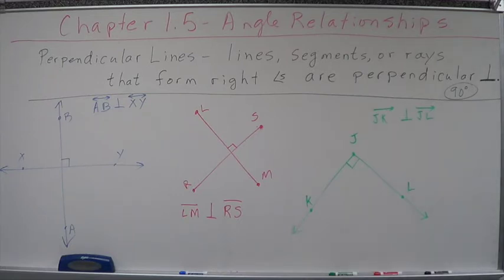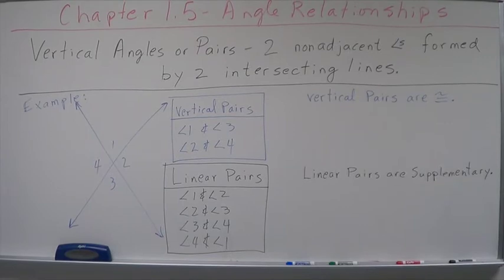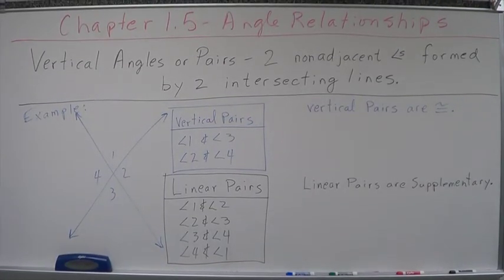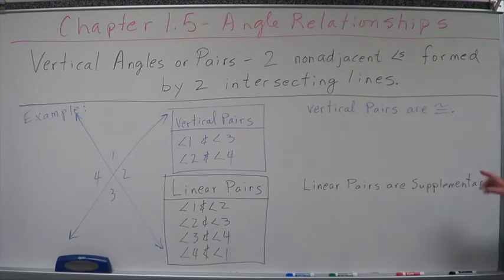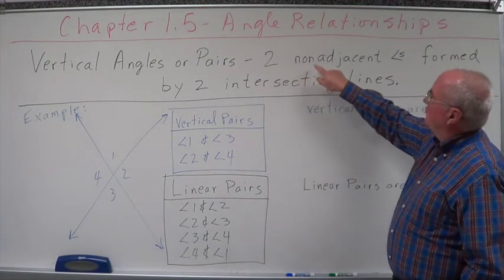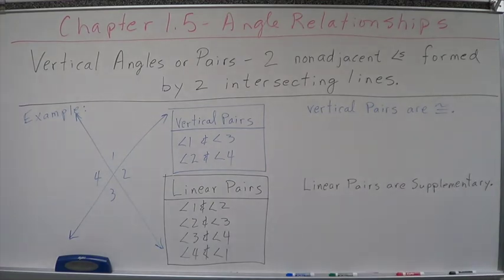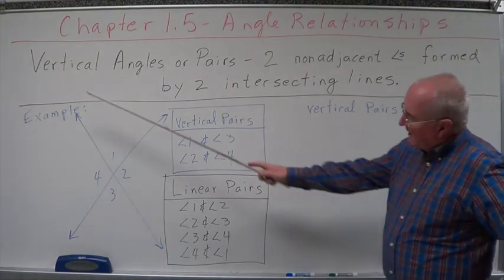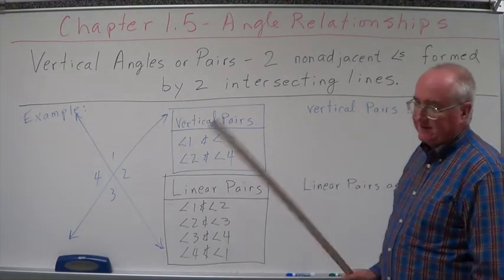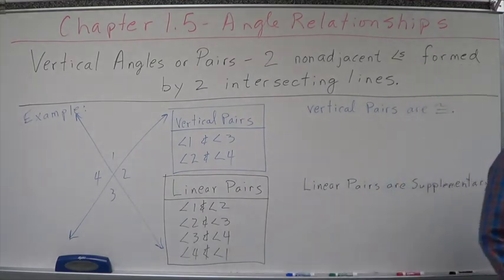Another relationship. A lot of these relationships. This is what's going to drive the algebra that we do. Geometry is algebra with pictures. These are the pictures that we draw that define the algebra. The last relationship we want to talk about is vertical angles or pairs. Vertical angles or pairs are two non-adjacent angles formed by two intersecting lines. Let's look at this real close because there are some interesting things that happen when lines intersect. I have a line here and a line here and they intersect. Four angles are formed. Angle one, angle two, angle three, and angle four.